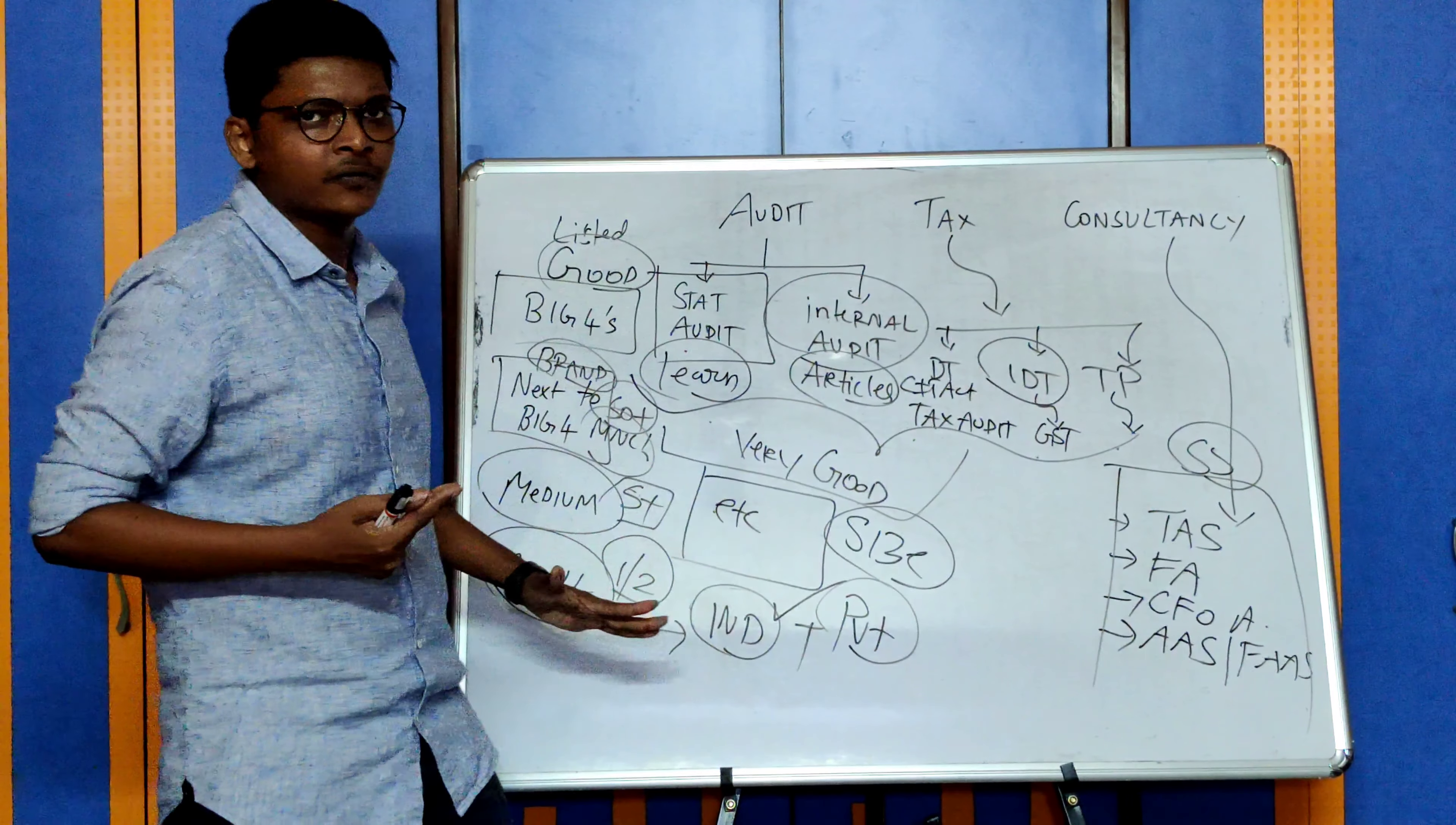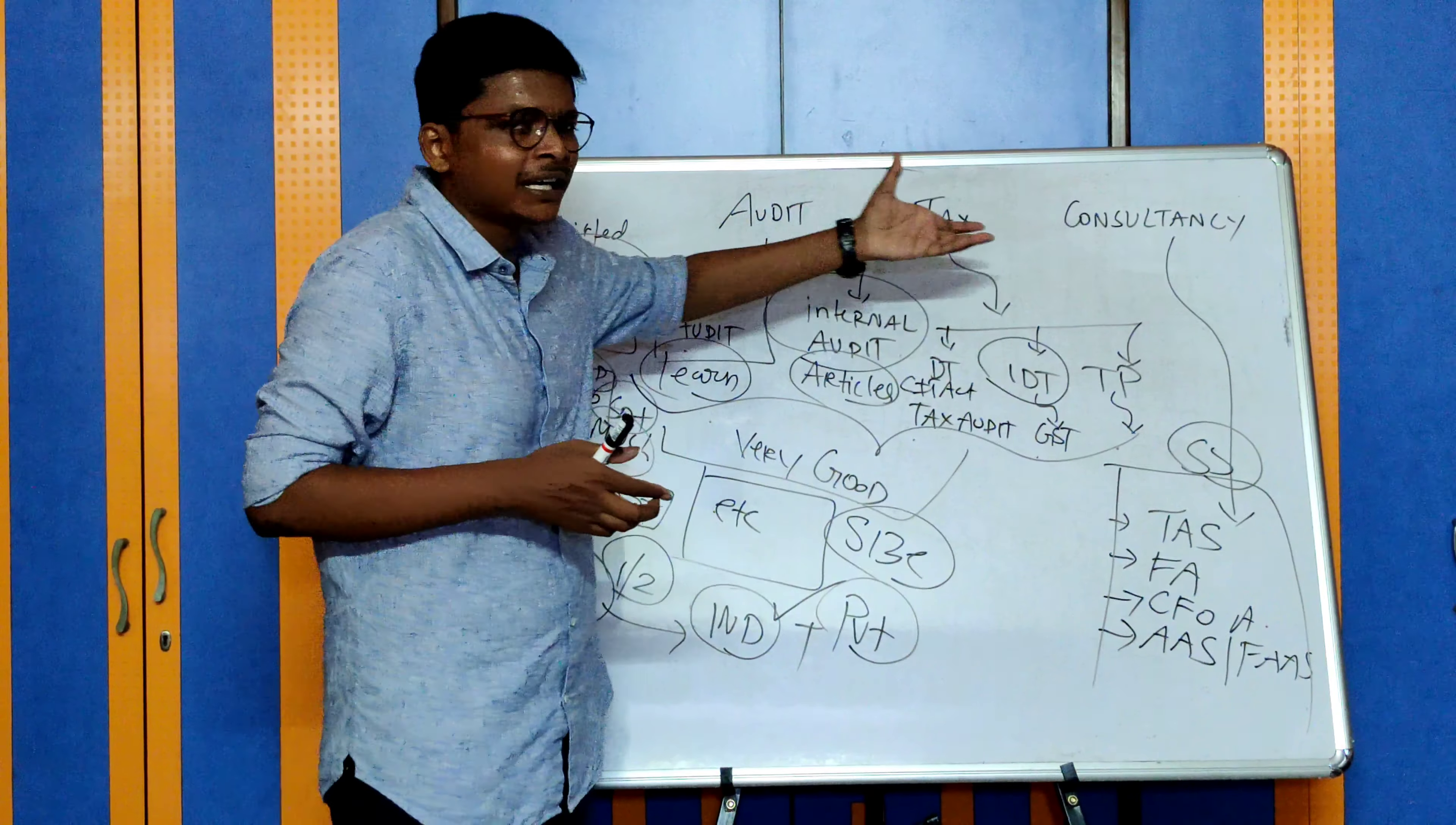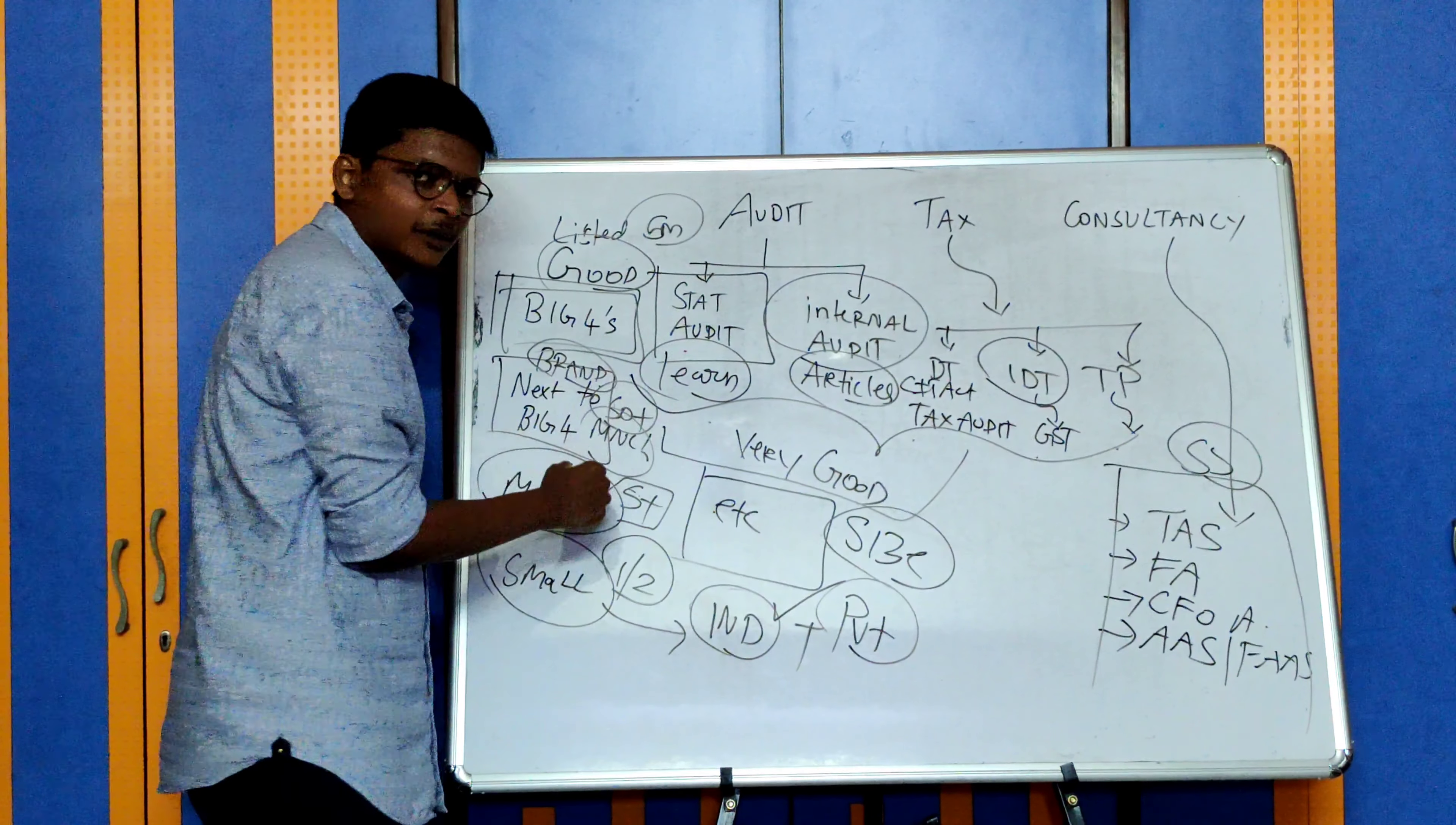Now that you know the different services provided and different types of firms, you can choose what suits you best. Let's say a student does not want to undergo so much pressure. There will be a lot of work in Big Four, then he can choose a firm next to Big Four or a medium-sized firm where he'll have a little more time. However, if you see results, Big Four always has good results. That is because the exposure in Big Four is very good - most of your final subjects to an extent get exposed in their articleship work.